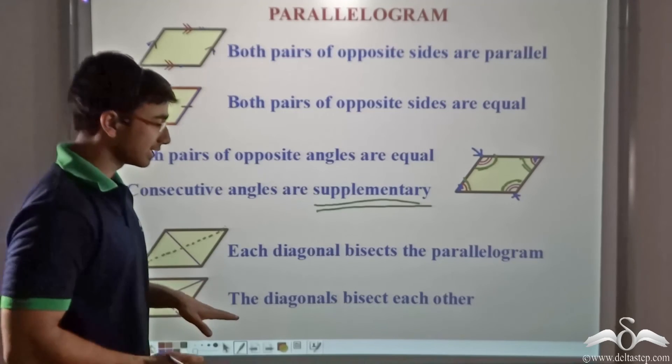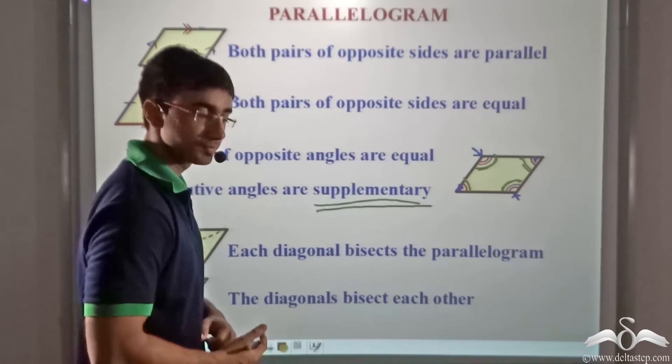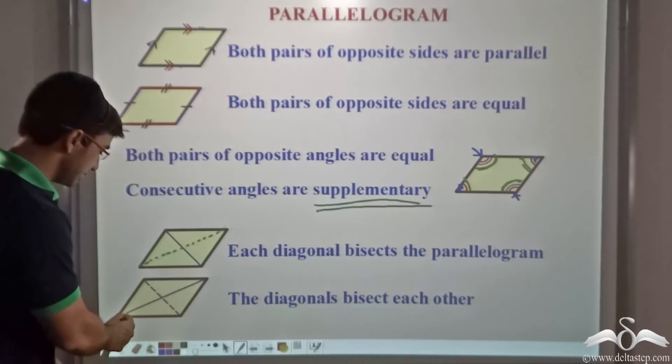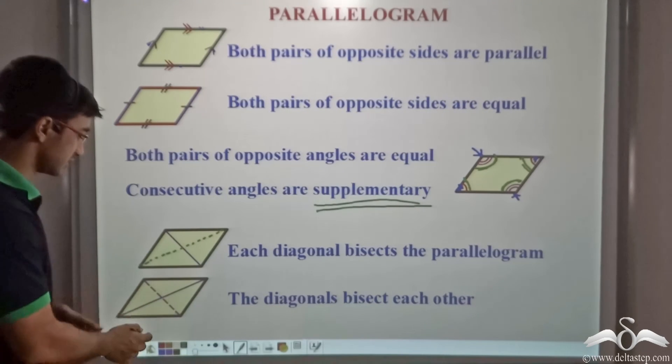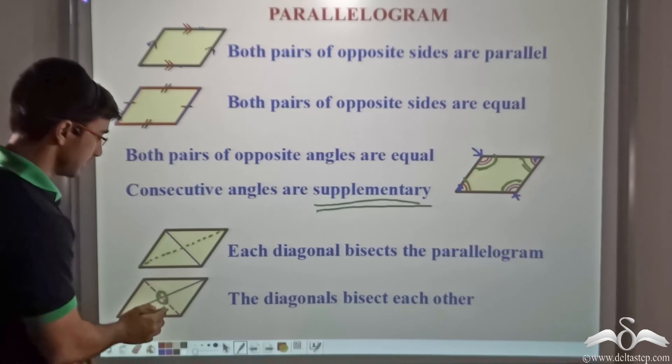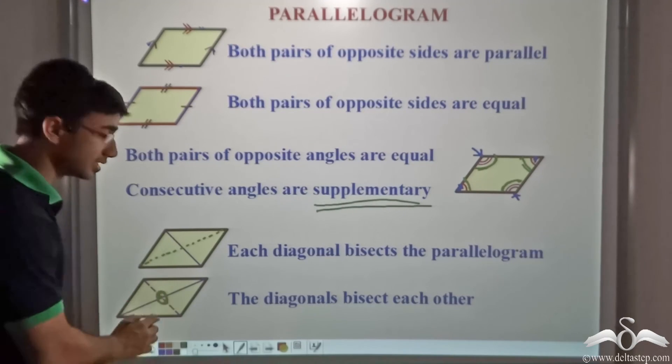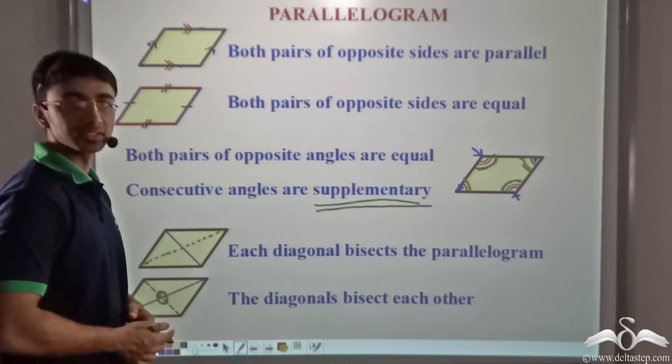And lastly, the diagonals bisect each other. Or in other words, this particular diagonal will bisect this diagonal and vice versa. So we can say that this particular point over here is the midpoint for both the diagonals.